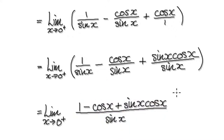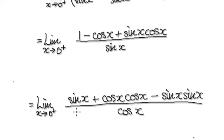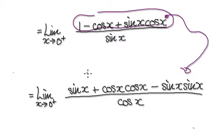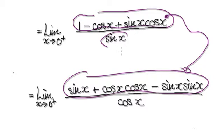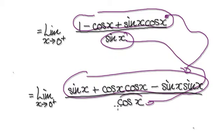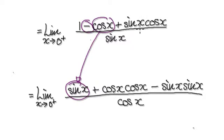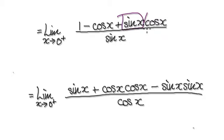0 over 0 is an indeterminate form, so we can apply L'Hôpital's rule. So differentiate. Applying L'Hôpital's rule — differentiate this, that will then give us this whole thing here. Differentiate this, that will then give us this thing here. When you come to differentiate this, that will then give you a minus sign. But because you've got another one here, that will give you a positive sign. Here you've got to use the product rule.